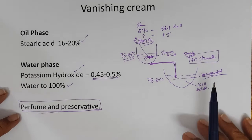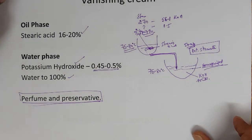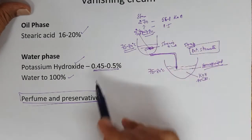When you use 0.5% sodium hydroxide, it will react with about 2.4 grams of stearic acid. The remaining stearic acid will form the oil phase. That is how the vanishing cream is made. At 45 to 50 degrees you add the perfume and preservative.